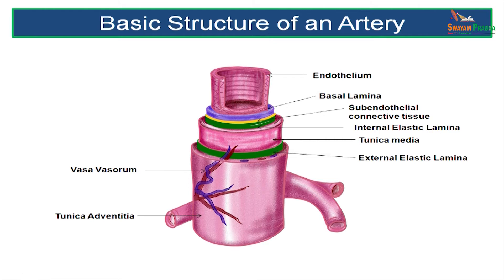The next layer is the tunica media — a thick muscular and elastic layer — outer to which is the external elastic lamina. The outermost layer is the tunica adventitia, and there are vessels in it called vasa vasorum.